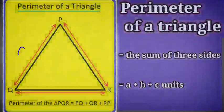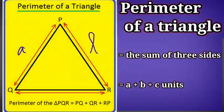The perimeter of a triangle is equal to the sum of its three sides. We can measure the perimeter of a triangle if we know the measures of its three sides, which is equal to a plus b plus c units.